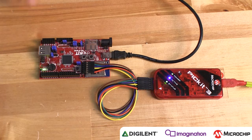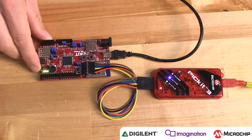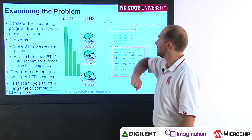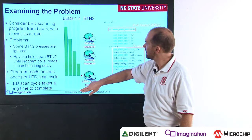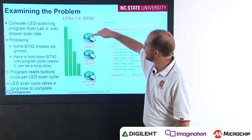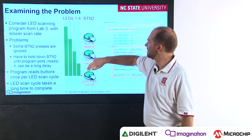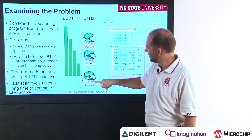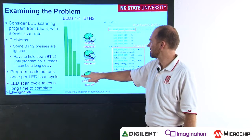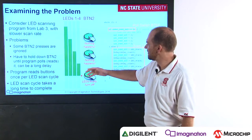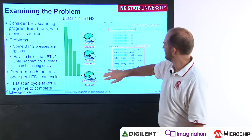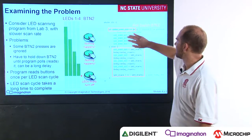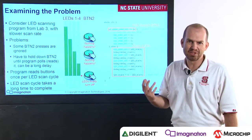We want the switch to turn the LED off immediately, but our scheduling approach doesn't work that way. Here's a visual representation of what happens with the LEDs. Time is advancing this way. LED 1 turns on, LED 2 turns on. We press the button here — nothing happens. LED 3 turns on, nothing happens. LED 4 turns on. Then finally, when we press the button, the program reads the switch, sees it's pressed, and then changes the behavior. So we've got this delay between when we pull the switch and when we scan the LEDs. This is an example of the scheduling problem.